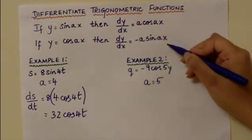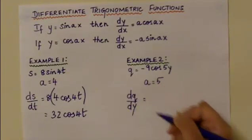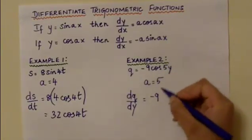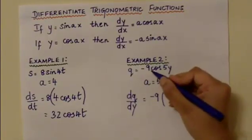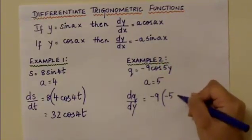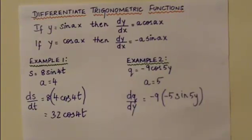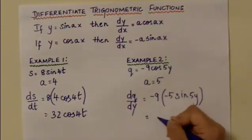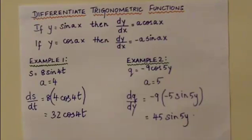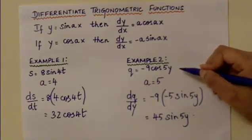Substituting into the formula, dq over dy equals minus 9 — the coefficient of the whole term — times the differentiation of cos 5y, which gives minus 5 sin 5y. So minus 9 times minus 5 becomes plus 45 sin 5y, which is the differentiation of q equals minus 9 cos 5y.